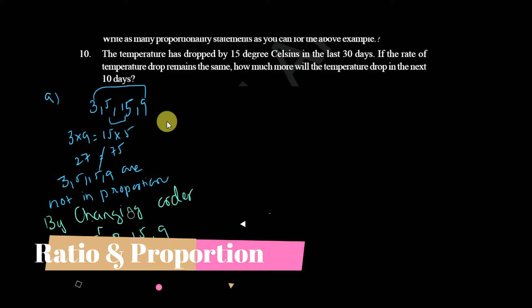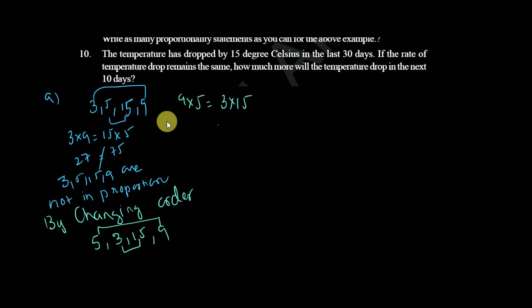First and middle two and last two. So 9 into 5, 3 into 15. 45, 45. Yes, this one is possible. Then another one we are going to check.